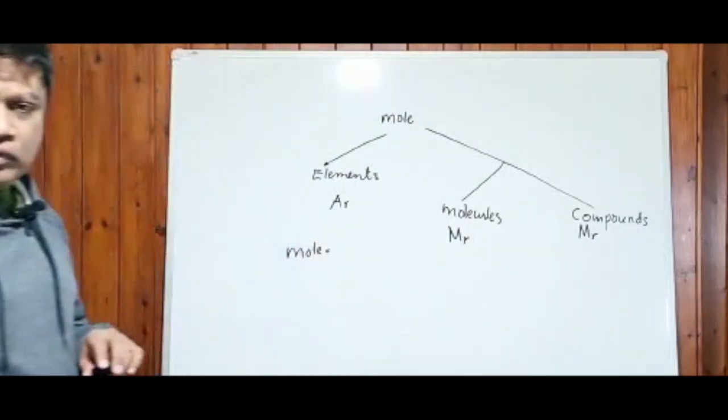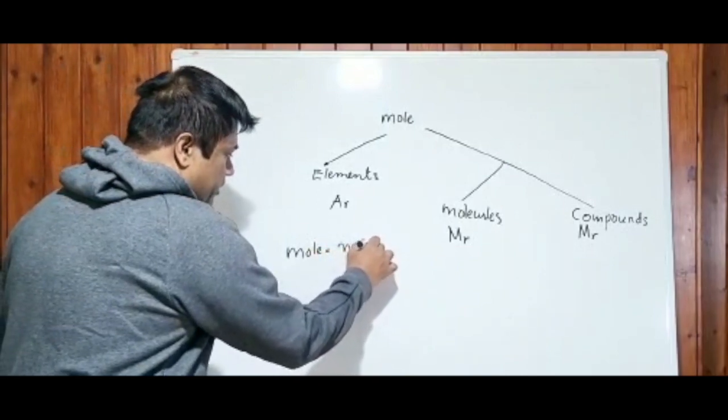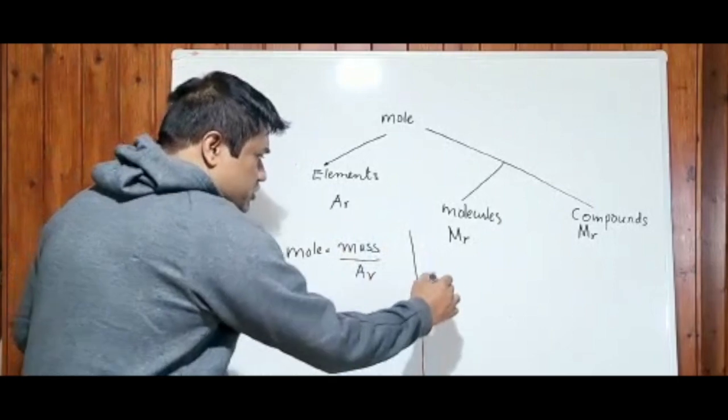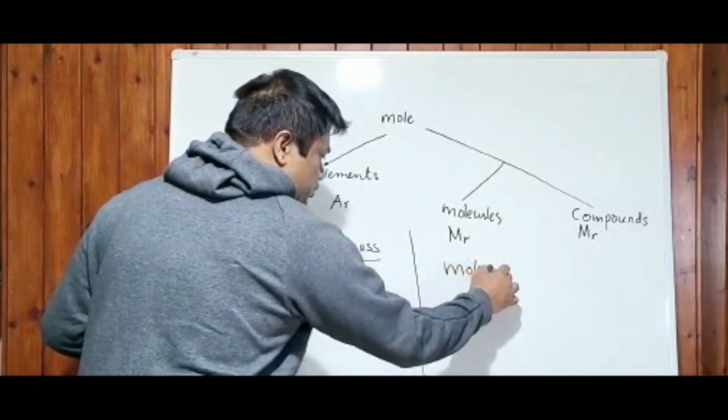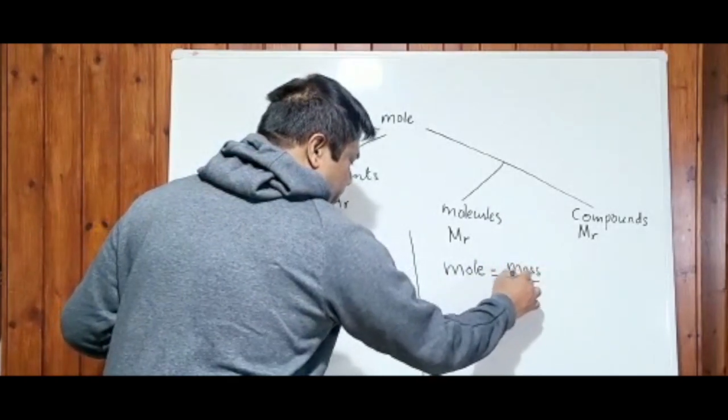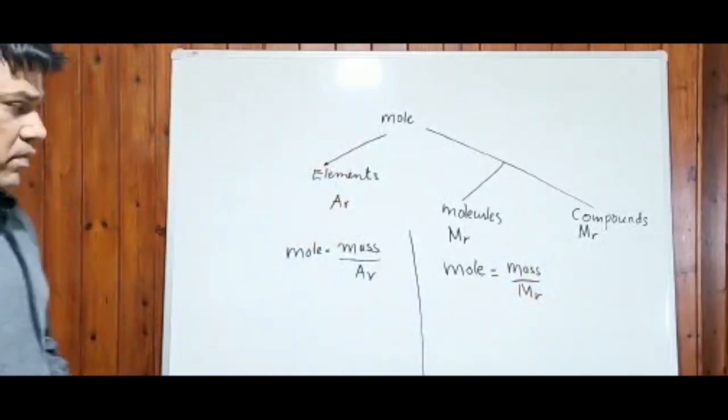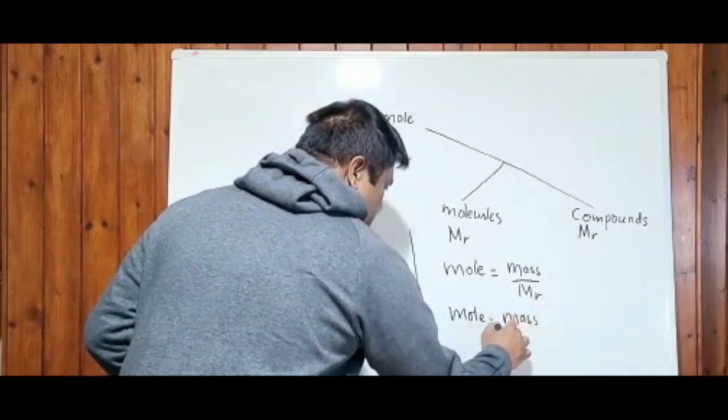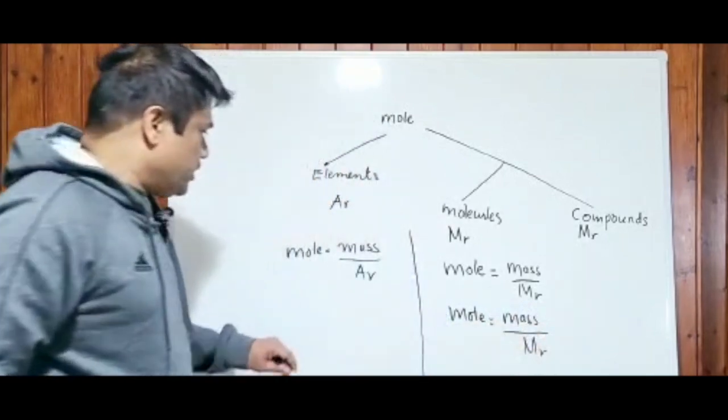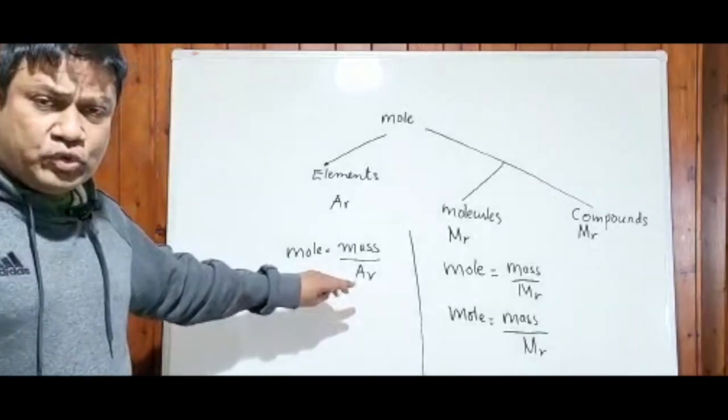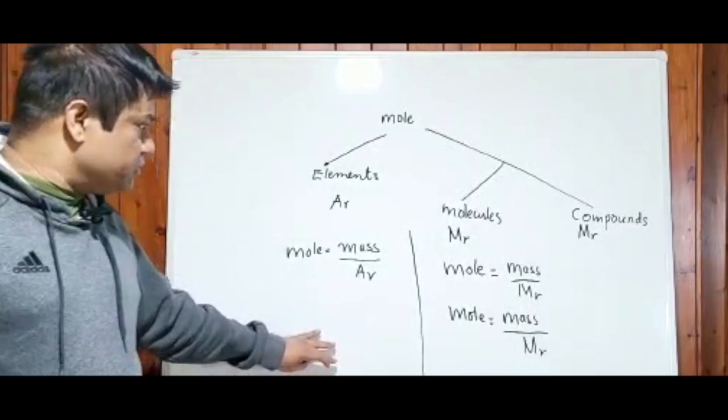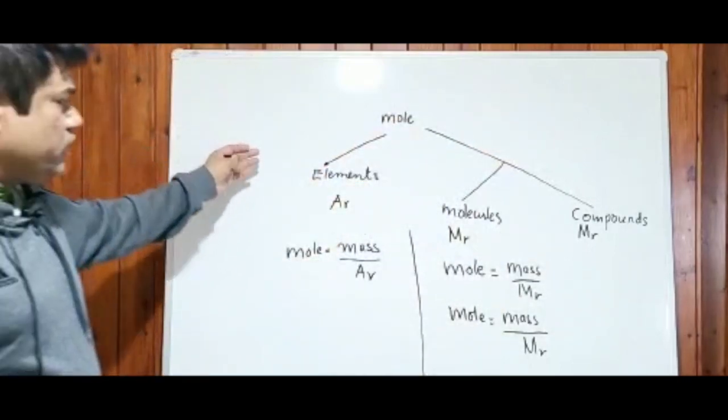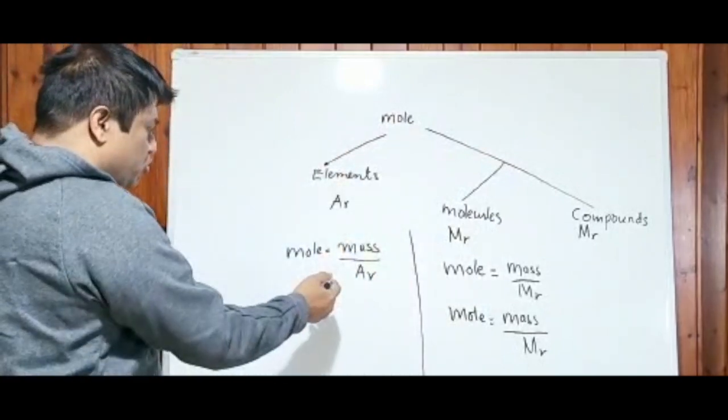Let's use the same MR or AR to work out the mole. So mole equals to mass of any element divided by its AR in case of elements. In terms of molecules, mole equals to mass of molecules divided by its MR. For compounds, same thing: mole equals to mass of a compound divided by its MR. AR we don't need to work out - AR is given in the periodic table. Let's use the periodic table so we can work out the mole for elements.